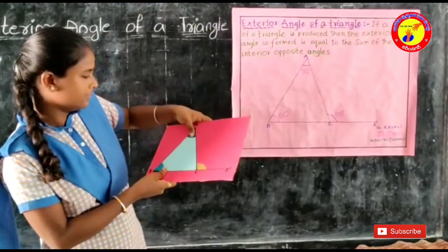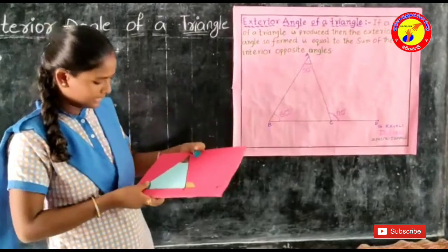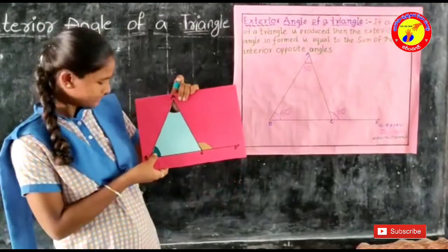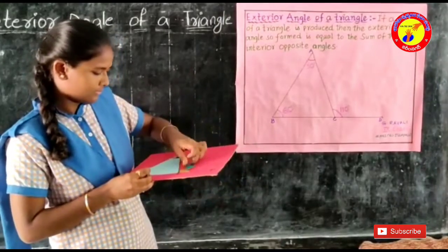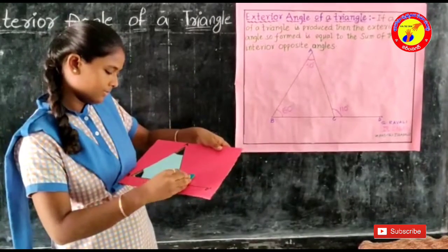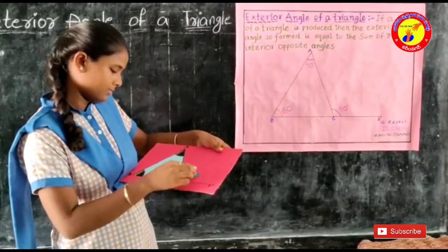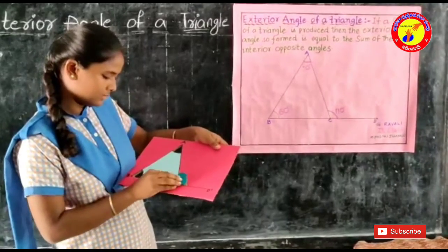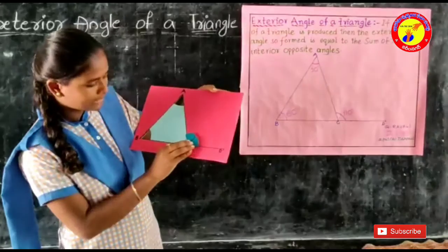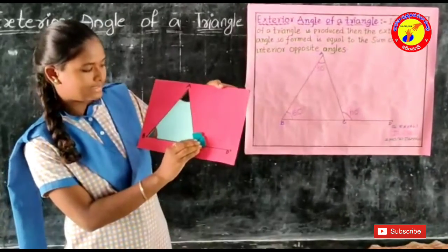Here angle A is 50 and angle B is 60. So angle A and angle B equal to angle ACD.